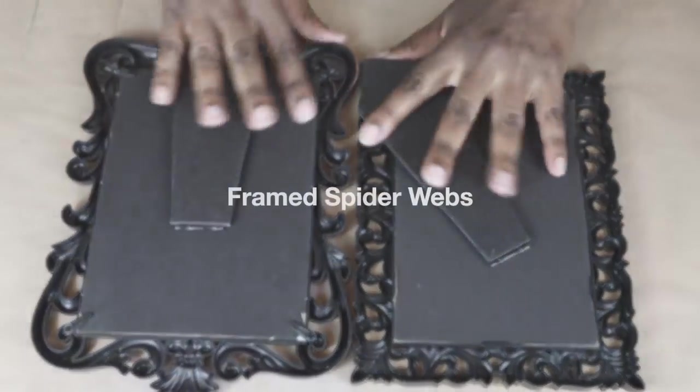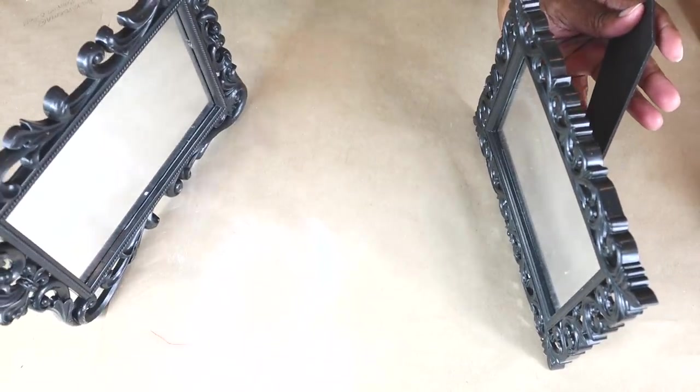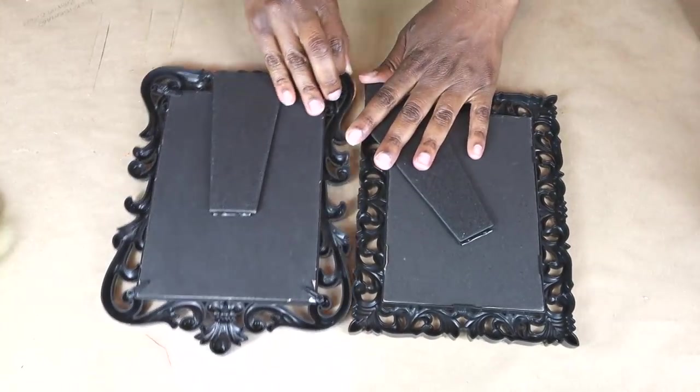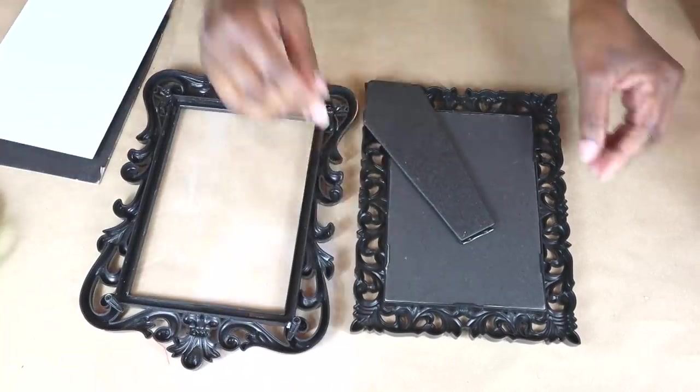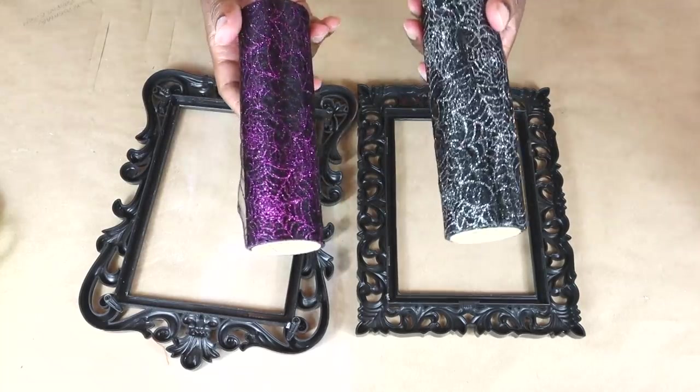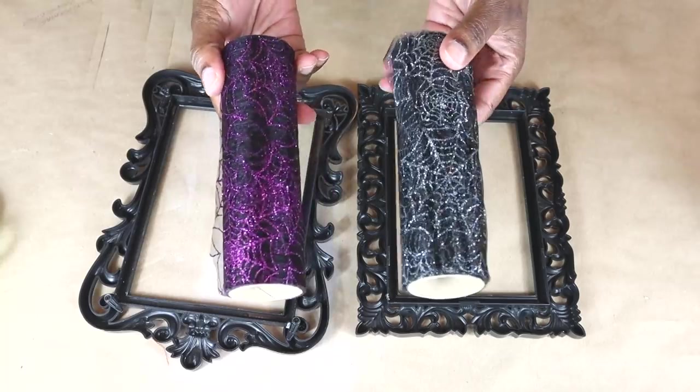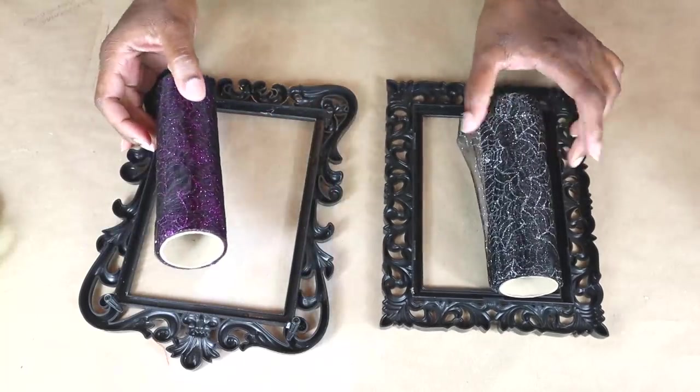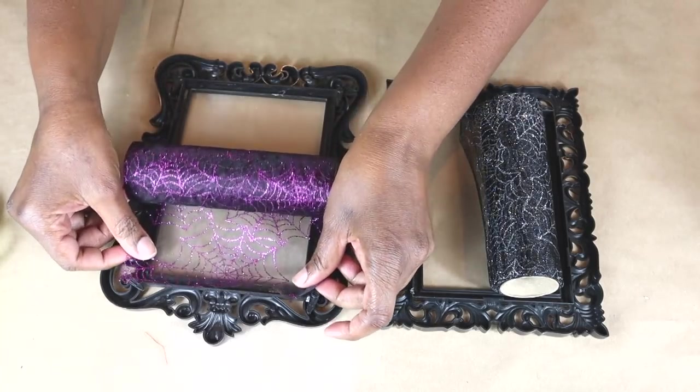For our next DIY, we're going to make some framed spider webs using two of these mirrors from the Dollar Tree. And I just remove everything, the backing and the mirror as well. And I'm going to take these two different mesh from Dollar Tree. One is purple and black, the other silver and black. I believe it also comes in black and gold.